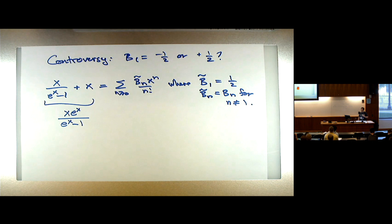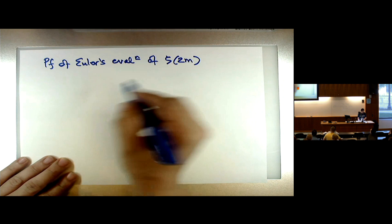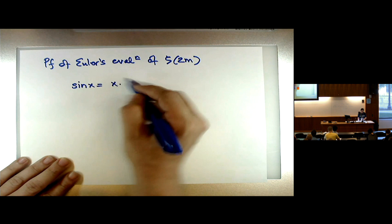So where does Euler's formula for the zeta function at even numbers actually come from? I wanted to mention that briefly. The proof of Euler's evaluation comes from his idea that the sine function has an infinite product representation.